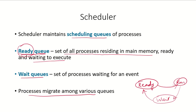A process can move from the ready queue to the wait queue at any time. If it is waiting for the CPU, it is in the ready queue; if it is waiting for an input/output device, it is in the wait queue. A process may go from one queue to another as it changes state during the course of its execution.